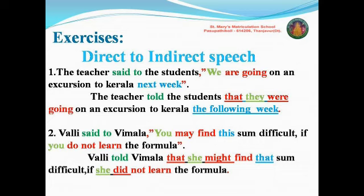First sentence: 'The teacher said to the students, we are going on an excursion to Kerala next week.' First, you have to find out what type of sentence it is. Secondly, the reported verb changes — 'said to'. Thirdly, you have to remove the comma and open quotation. Fourth step: pronoun changes — 'we' will be changed. Next, tense changes take place.